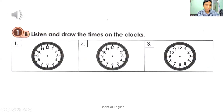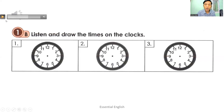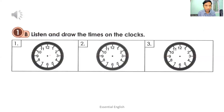Please listen again. One: it's a quarter past three. For number one, you have to draw the hour hand pointing to three, and the minute hand pointing to three as well — that's a quarter past three.